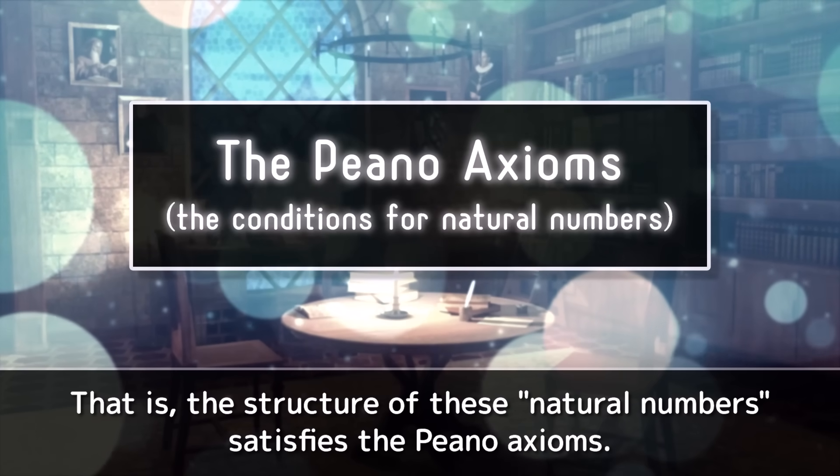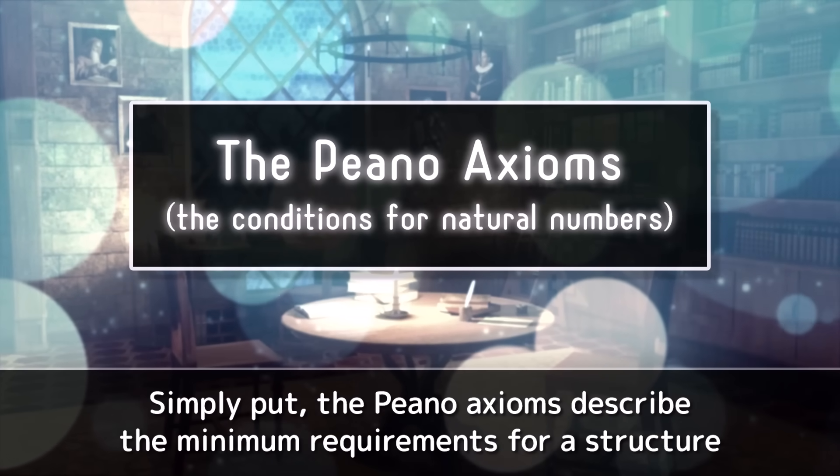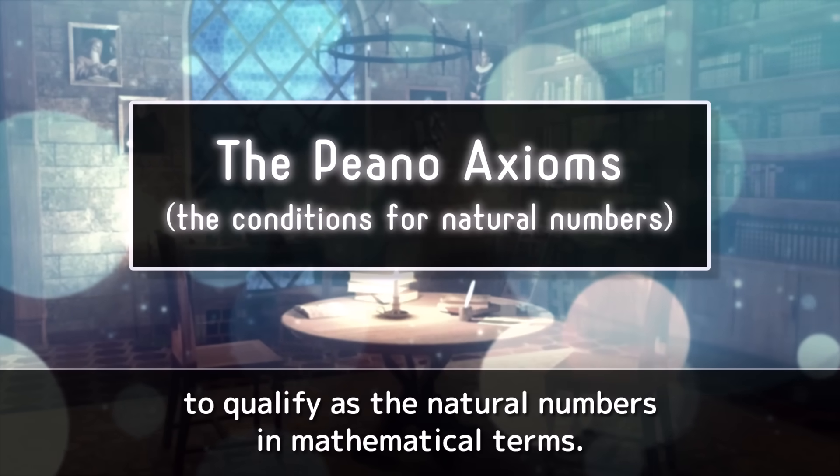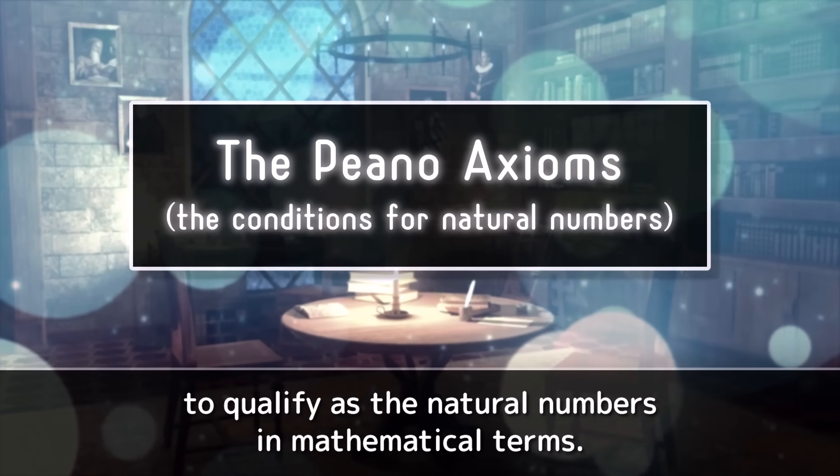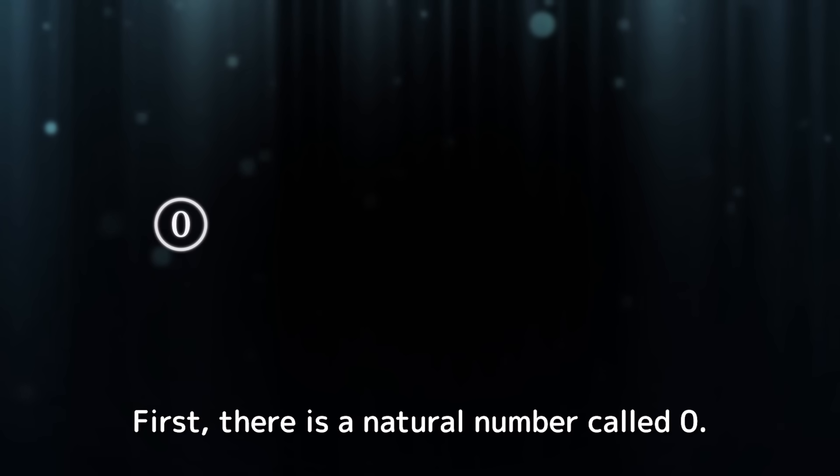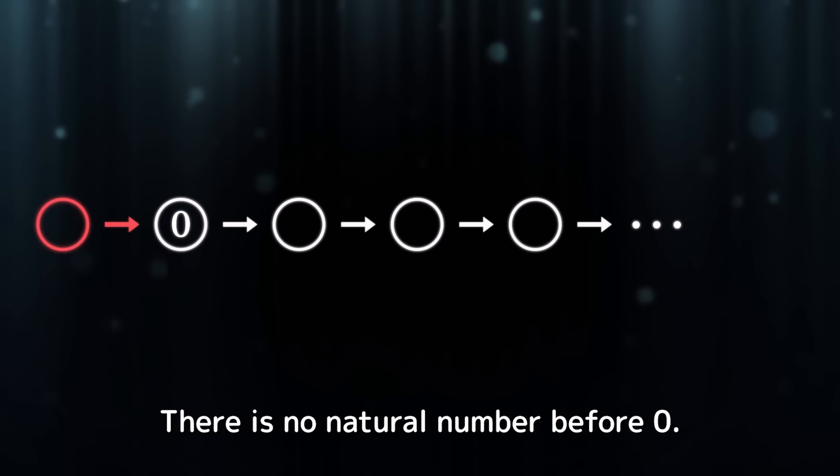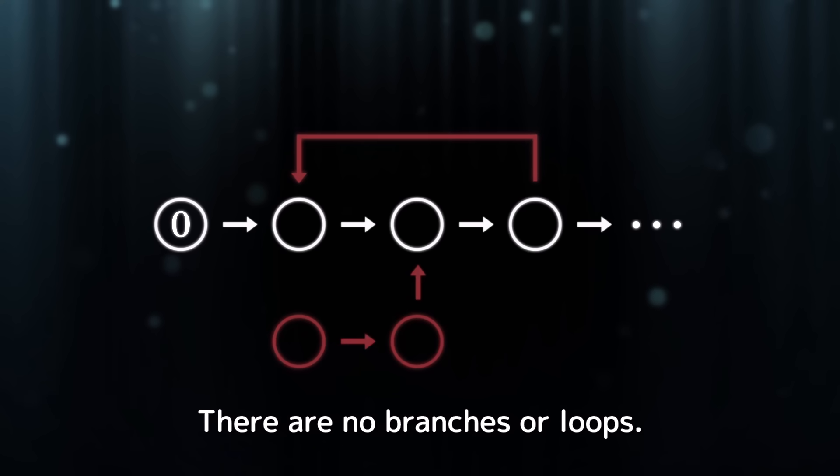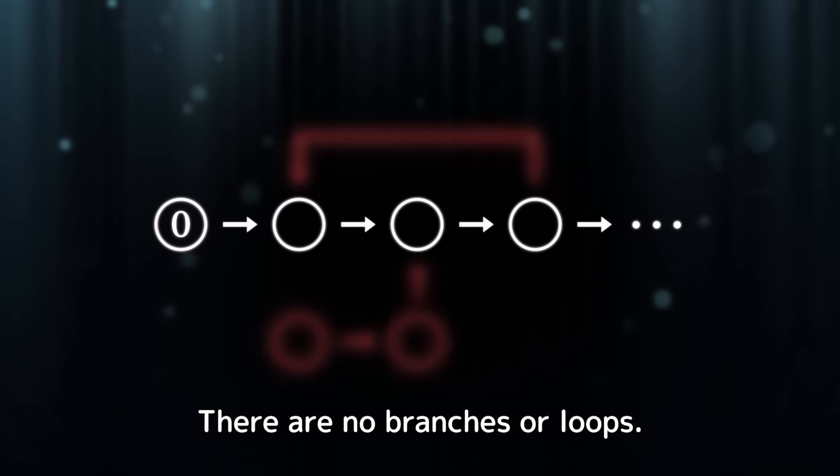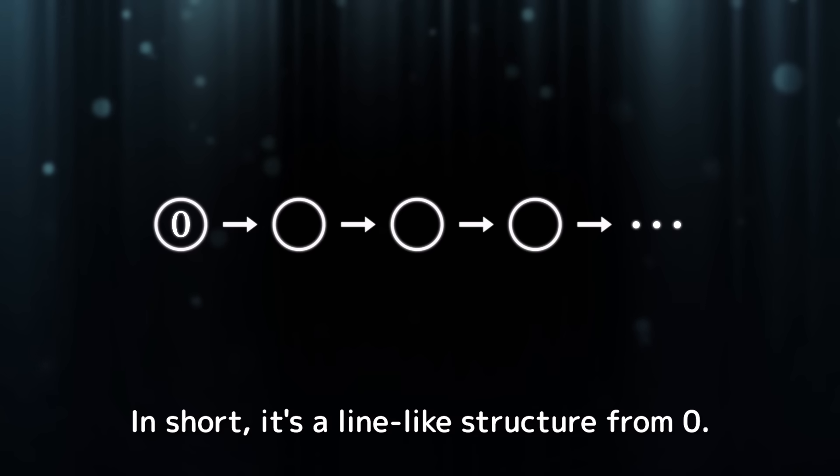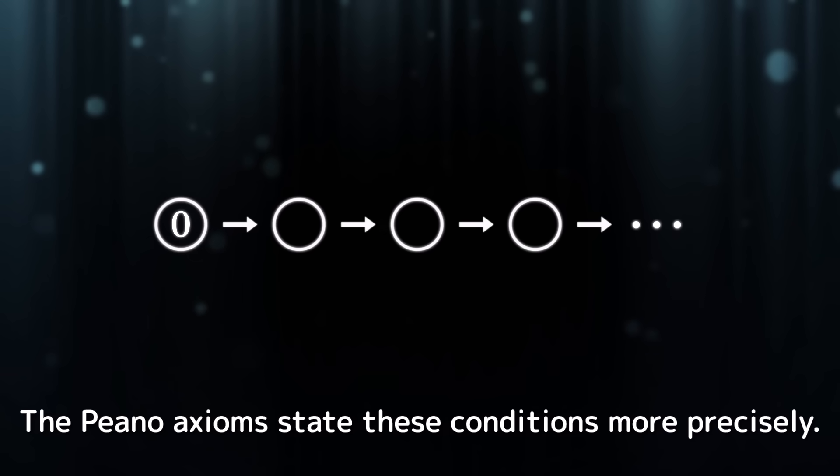That is, the structure of these natural numbers satisfies the Peano axioms. Simply put, the Peano axioms describe the minimum requirements for a structure to qualify as the natural numbers in mathematical terms. To explain this intuitively, first, there's a natural number called zero. Each natural number has a next natural number. There is no natural number before zero. There are no branches or loops. Every natural number can be reached starting from zero. In short, it's a line-like structure from zero.